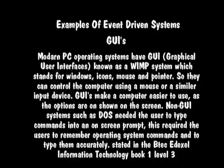Graphical user interface: modern PC operating systems have graphical user interfaces, known as a WIMP system, which stands for Windows, Icons, Mouse and Pointer. It allows you to control the computer using a mouse or a similar input device. Graphical user interfaces make a computer easy to use as the options are shown on the screen.